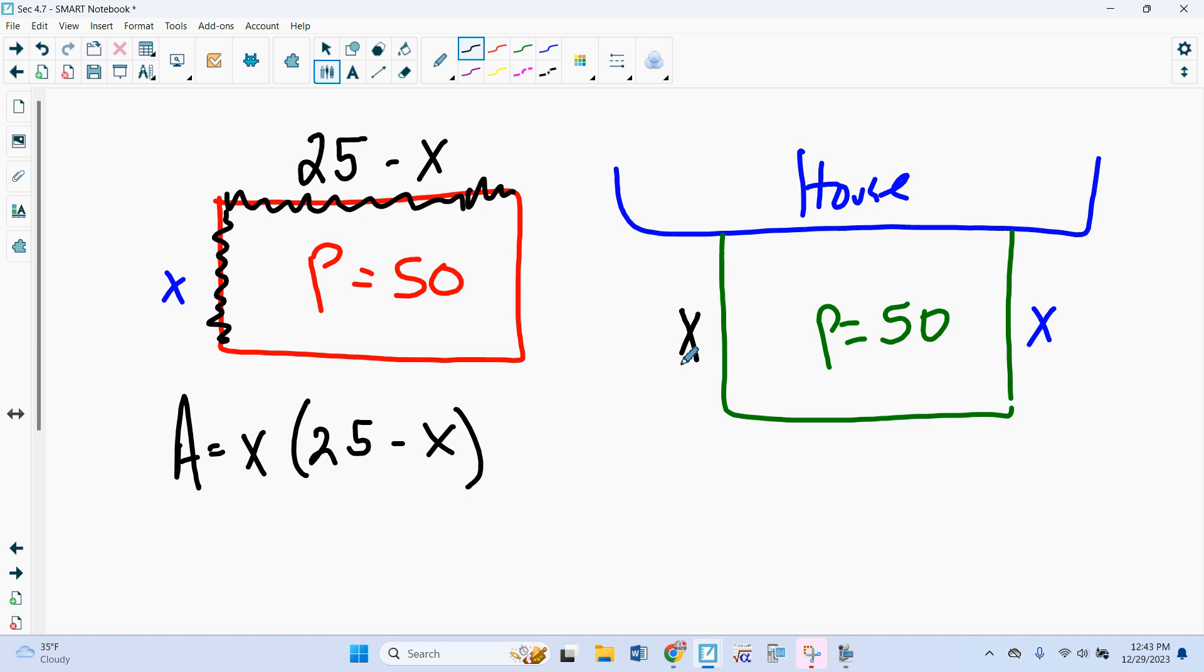Remember, if we had a house on one side, and we said this side is x, and this side is x, then this side would be 50 minus 2x. And then we could do the same kind of thing, finding our area. This is a different problem, but it would work out the same way. So we've looked at this previously in pre-calc. Now we want to look at similar problems and beyond by using our calculus.